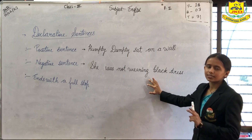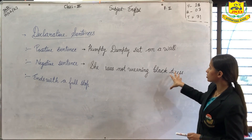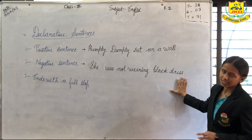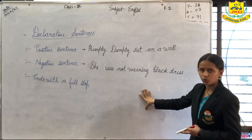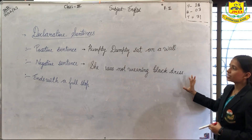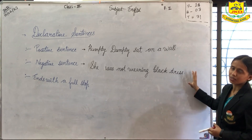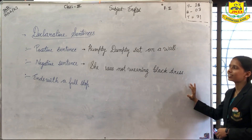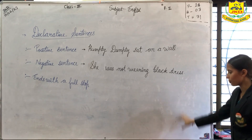Positive sentences and negative sentences also come under declarative sentence. For example, she was not wearing a black dress. How you will find that the sentence is written in negative form? Words such as 'not' and 'no' written in a sentence means that they are in negative form. So positive sentence, negative sentence — all such type of sentences come under declarative sentence, and declarative sentence always ends with a full stop.